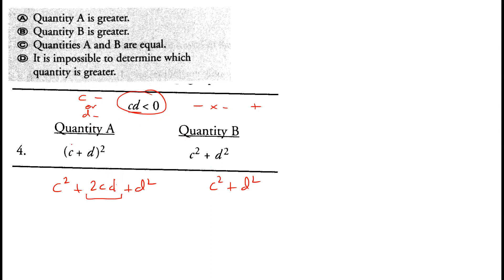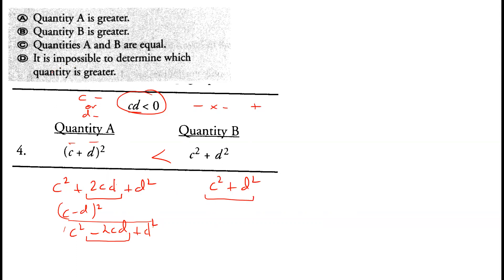If d is negative, (c+d)² is actually written as (c−d)², which expands to c² − 2cd + d². So we are subtracting 2cd, meaning quantity A is less than c² + d². Therefore quantity B is greater than quantity A. Also, c and d cannot be zero because then cd would equal zero. Hence option B is correct.